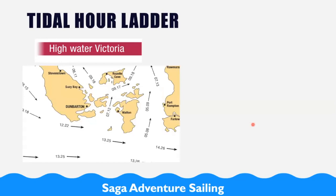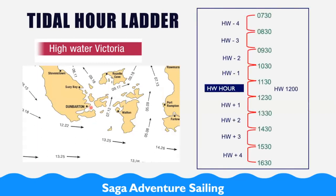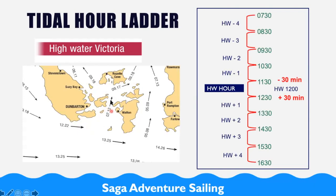We have something called the tidal hour. When you look in the tidal stream atlas, the picture shown is valid for one hour. What does that mean? If high water Victoria is at 12 o'clock, then we assume we have this picture of tides for one hour — that means 30 minutes before high water and 30 minutes after, so from 11:30 to 12:30 we have this picture. If you're sailing within that one hour, use these tides for any calculations or corrections.